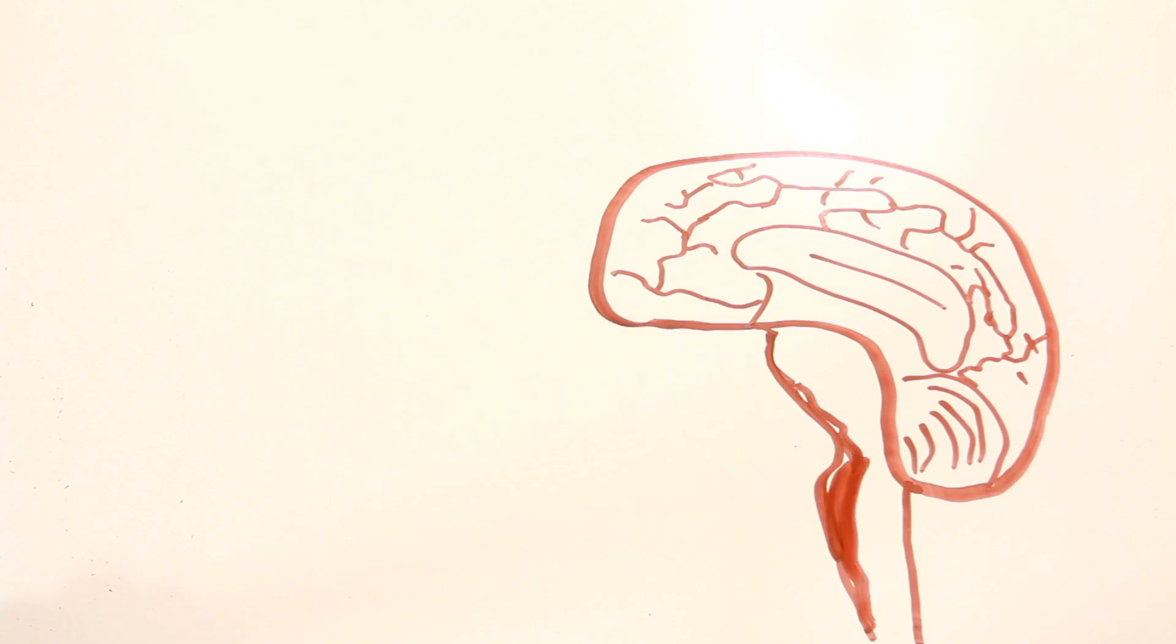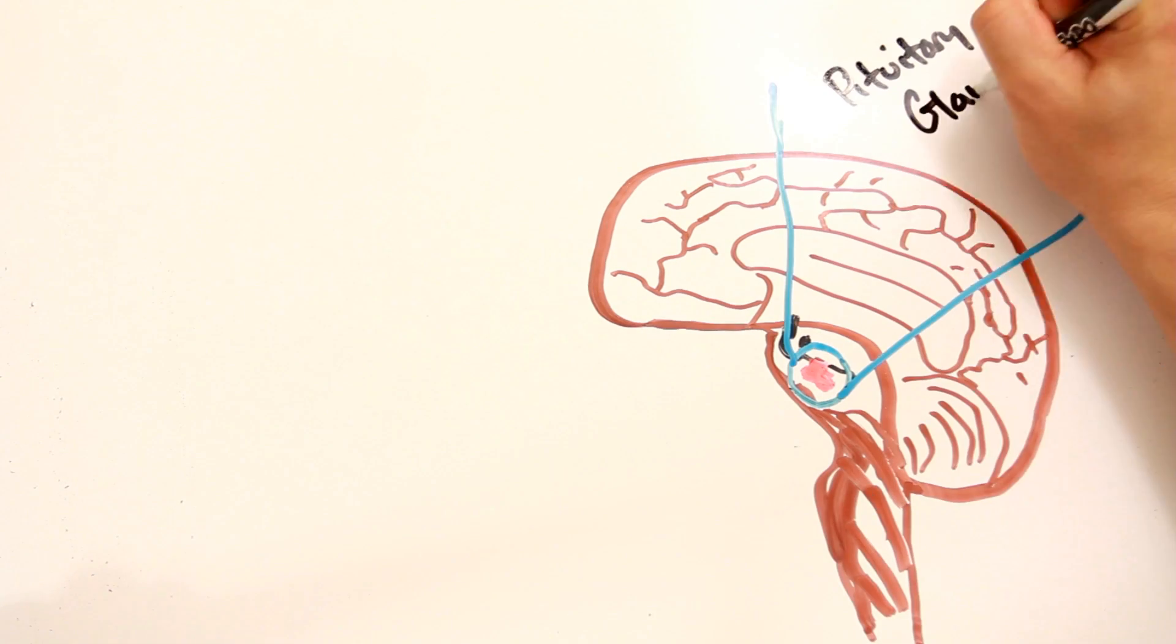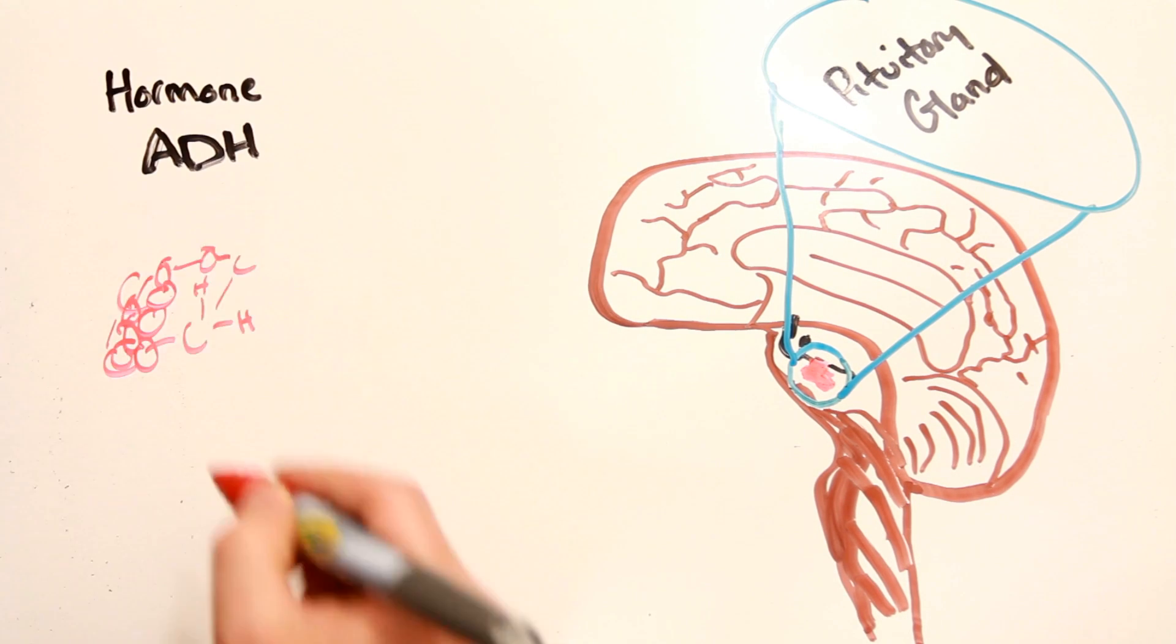Your pituitary gland, which resides at the base of the brain, controls the release of a hormone known as anti-diuretic hormone, or ADH for short.